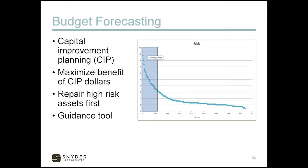This leads us to budget forecasting — the capital improvement planning portion where this information can really be beneficial in the CIP process. We know we have limited funds and can't do it all. You can take that curve and assign dollars to different segments, widening the box on the left until you maximize the available dollars. Put the money towards the highest risk assets first. It's a very good guidance tool that financial advisors or accountants can easily see, showing we're using our limited money to the most effective means.